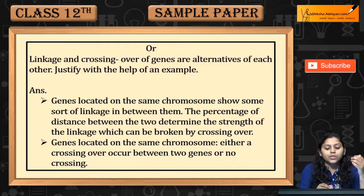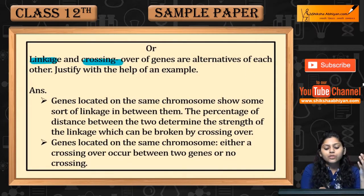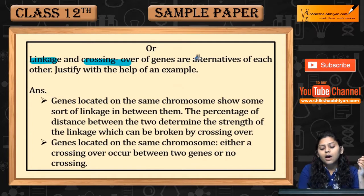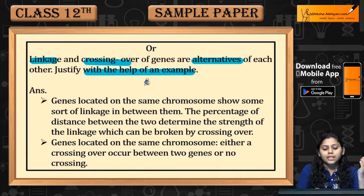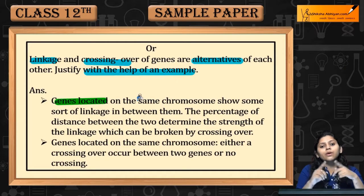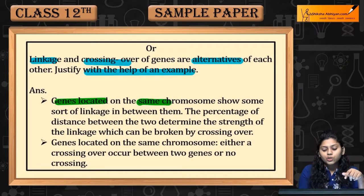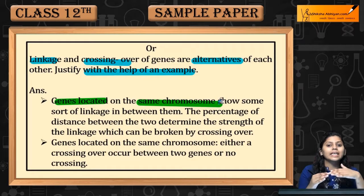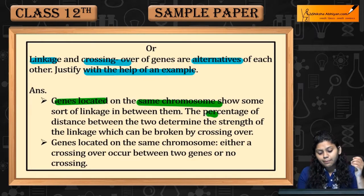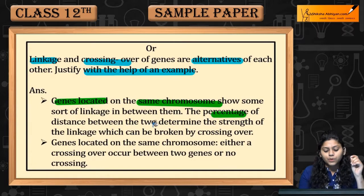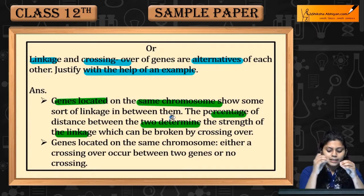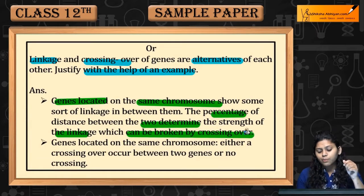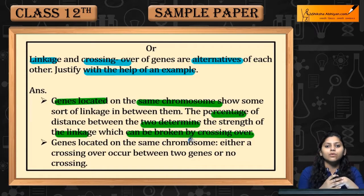Alternatively, question 12 may ask: linkage and crossing over of genes are alternatives of each other — justify with the help of an example. Genes located on the same chromosomes show linkage. The percentage of distance between the two genes determines the strength of the linkage, which can be broken by crossing over.